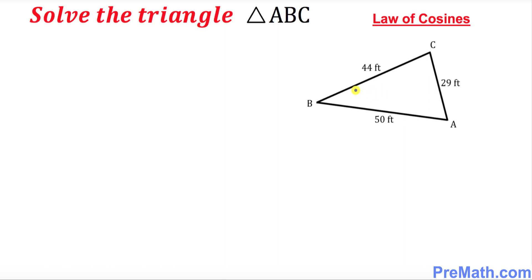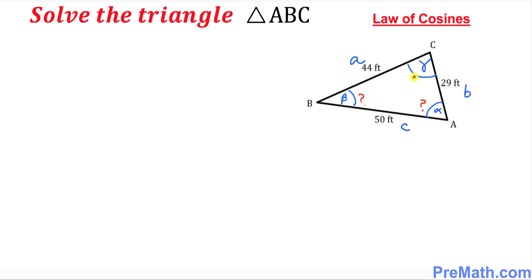In this triangle ABC, vertex A is right up here — that means alpha is this angle, and the side opposite to vertex A is lowercase a. Vertex B gives us the beta angle, and the side opposite to vertex B is lowercase b. Likewise, vertex C gives us angle gamma, and the side opposite to vertex C is lowercase c. So we are going to figure out these three angles: alpha, beta, and gamma.